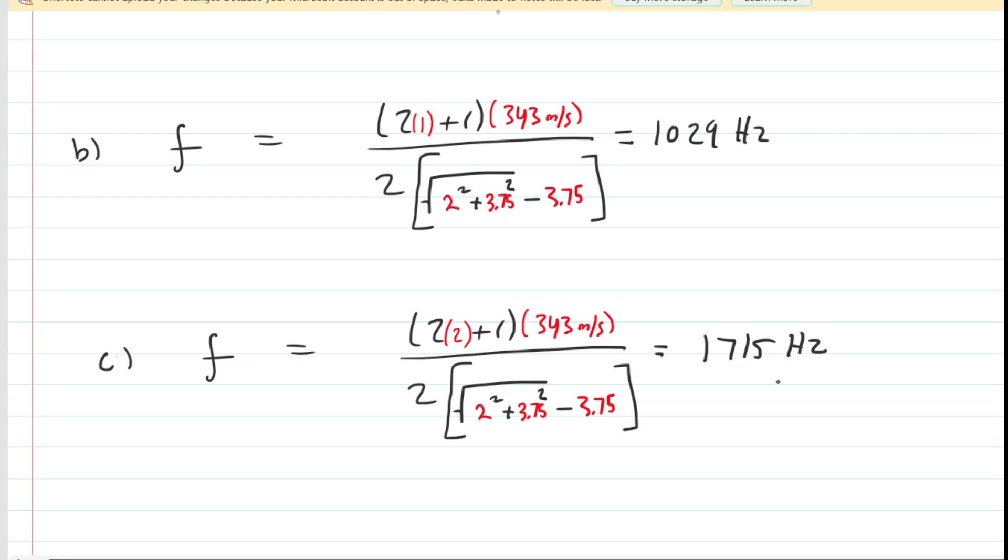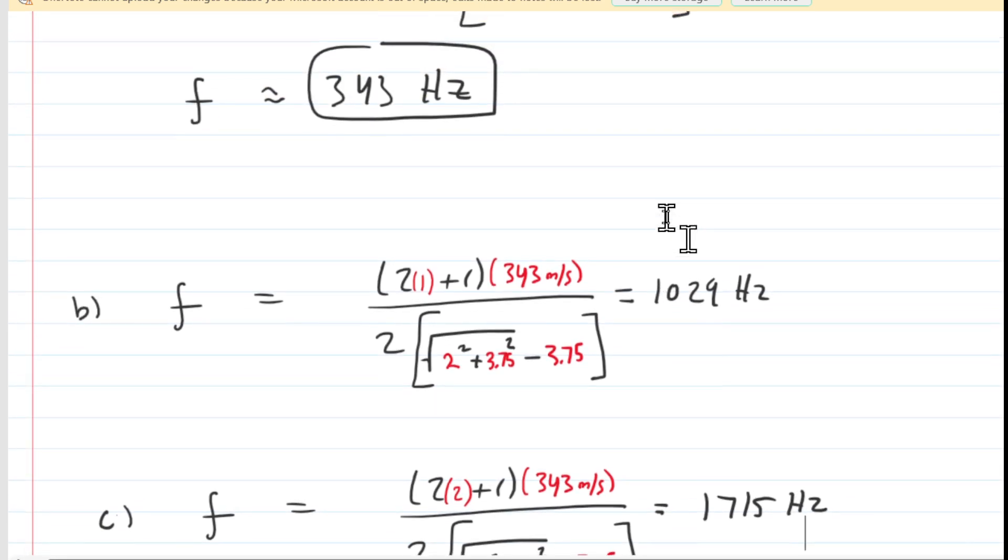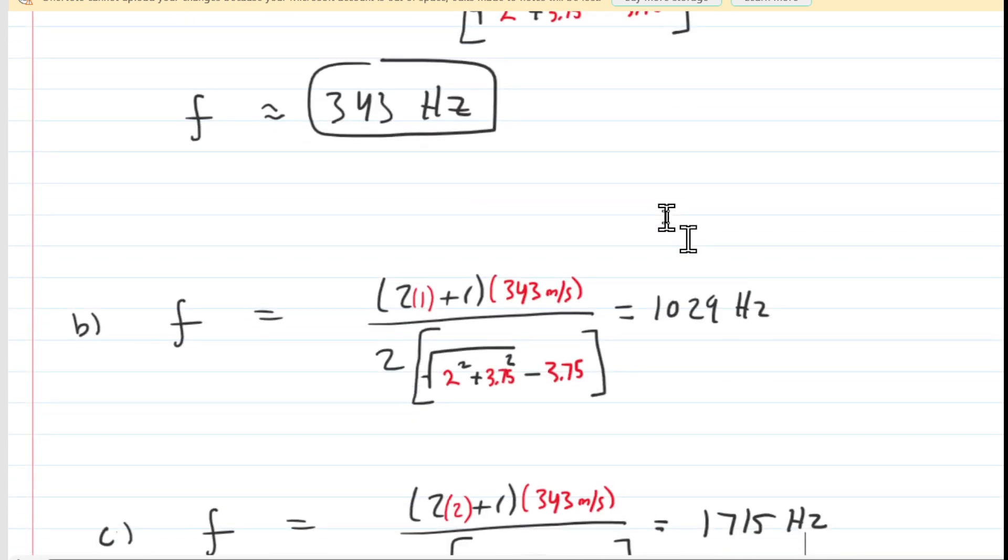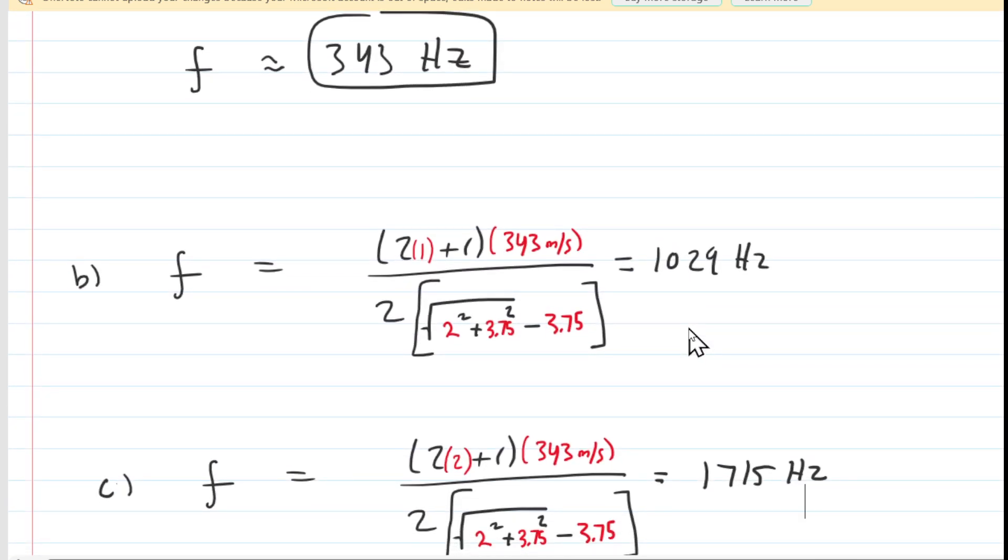Those are the frequencies, but the question asked by what must we multiply the frequency by from part a. So if we go to part b, we got 1029. You can actually take 1029 and divide by 343, and you would find that you would have to multiply by 3. So in other words, 1029 hertz is three times bigger than 343 hertz. And then perhaps we could therefore say that the factor is 3.